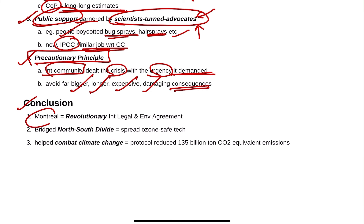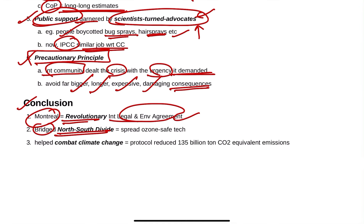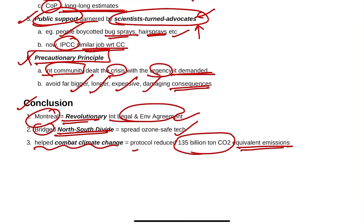In conclusion, the Montreal Protocol is a revolutionary international legal and environmental agreement. It bridged the north-south divide with respect to spreading ozone-safe technology, and it also helped combat climate change because the protocol reduced 135 billion tonnes of carbon dioxide equivalent emissions.